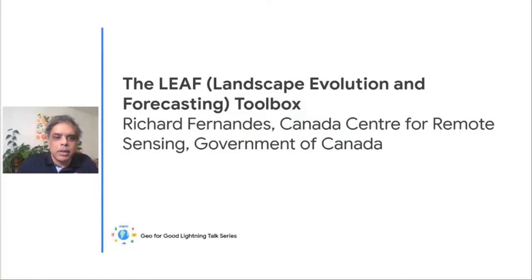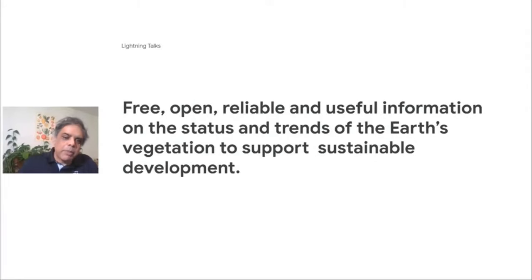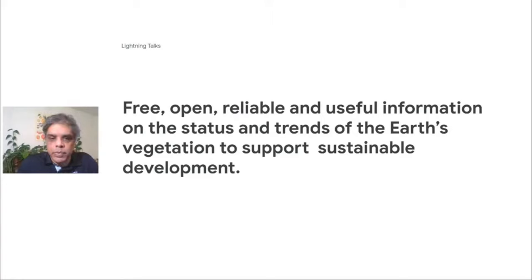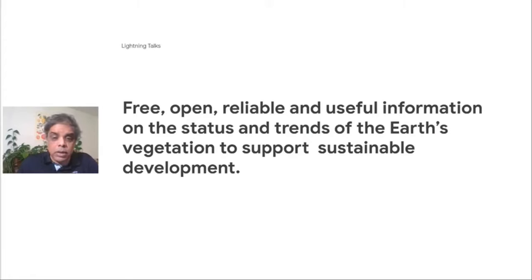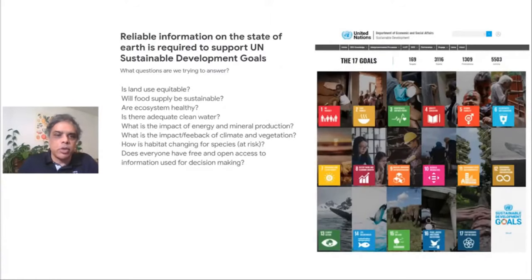Hi, I'm Richard Fernandez, and I'm going to be presenting the LEAF, or Landscape Evolution and Forecasting toolbox. This is a Google Earth Engine application we've developed at the Canada Centre for Remote Sensing with colleagues in Europe and America. We need information on the status and trends of vegetation on Earth for sustainable development issues — free and open so everyone can access it — and as a government, we want to make sure it's reliable, quality, and most importantly useful. Framing this from the United Nations Sustainable Development Goals, geographic information supports many of those questions.